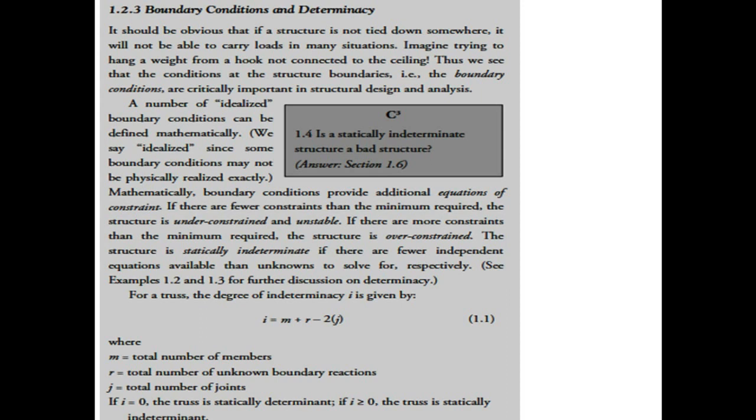The number of applied boundary conditions can be defined mathematically. A statically determinate structure is basically when the number of equations equals the number of unknowns. A statically indeterminate structure is when the number of equations and unknowns are not equal, but the number of unknowns is more than the number of equations, regardless if it's a 2D or 3D structure.